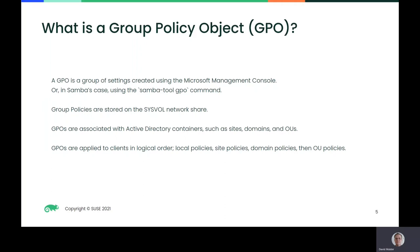Group policy objects are applied to clients in logical order: local policies first, site policies next, then domain policy, and finally OU policies.